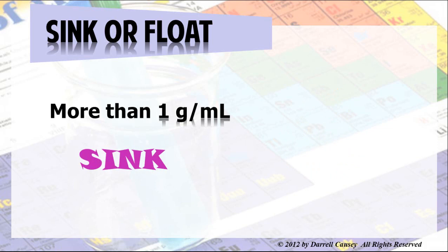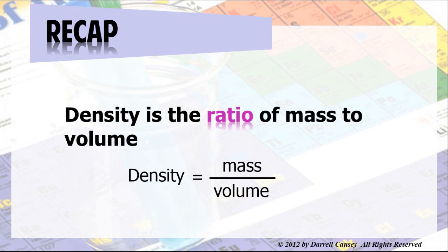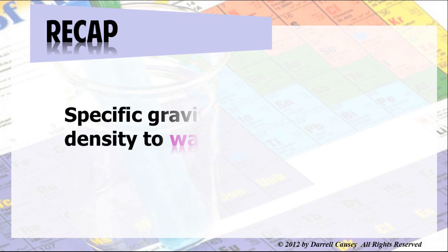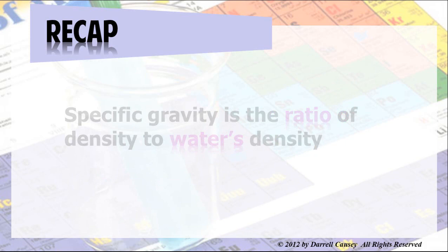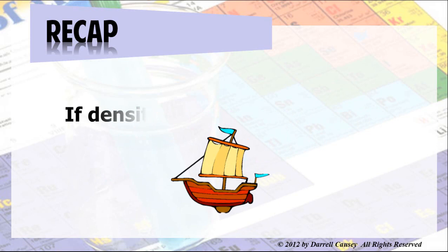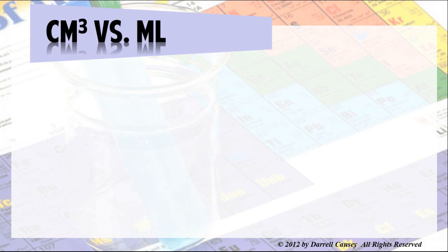And so, we can use that to help determine what a substance might be. Using density is a great physical property to help determine certain elements or compounds. Alright, let's recap. Density is the ratio of mass to volume. And our formula is d equals m over v. Specific gravity is the ratio of density to the water's density. And the units disappear. And if the density is less than 1, it floats. And if it's more than 1, it sinks.